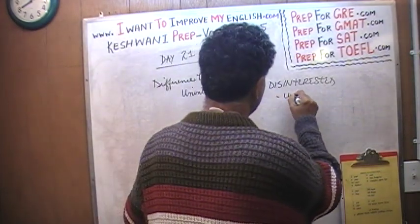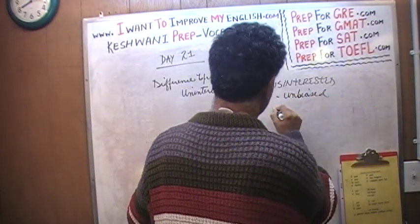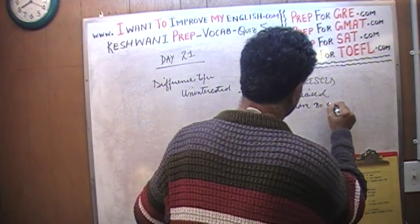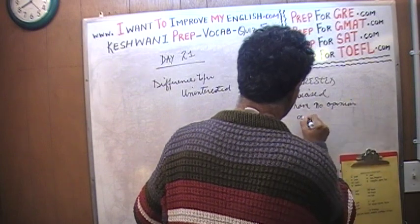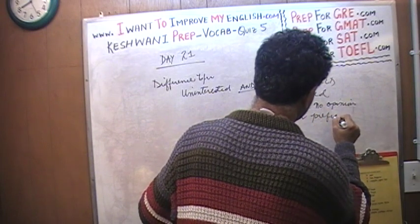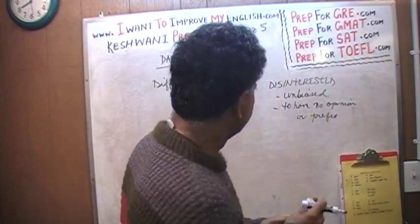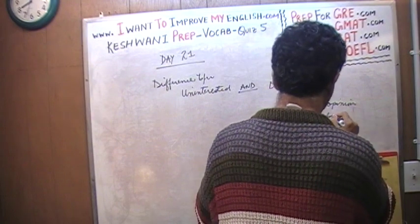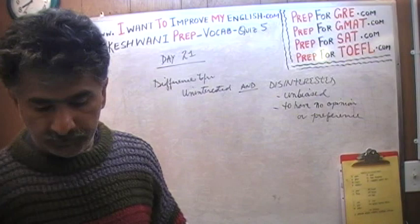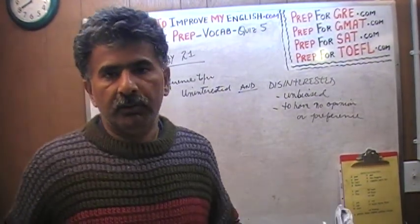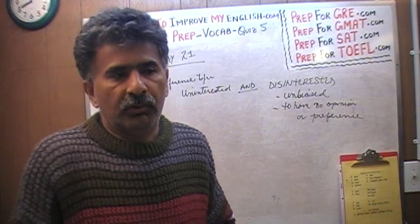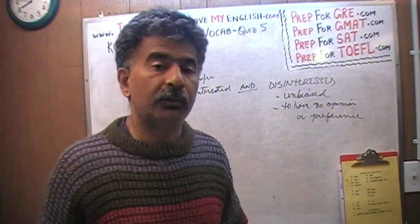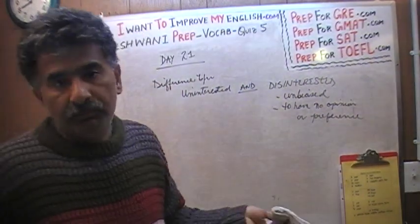Disinterested means to be unbiased — to have no opinion or preference. If a friend asks you which movie you want to go to, and you say 'I'm disinterested, I don't care, either one is fine with me' — you are disinterested. Uninterested means you have no interest in it.